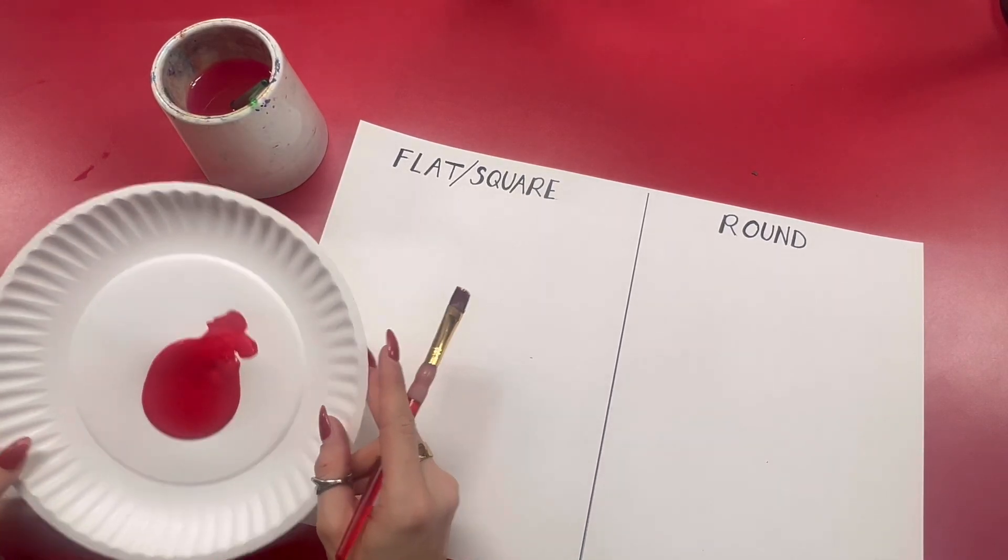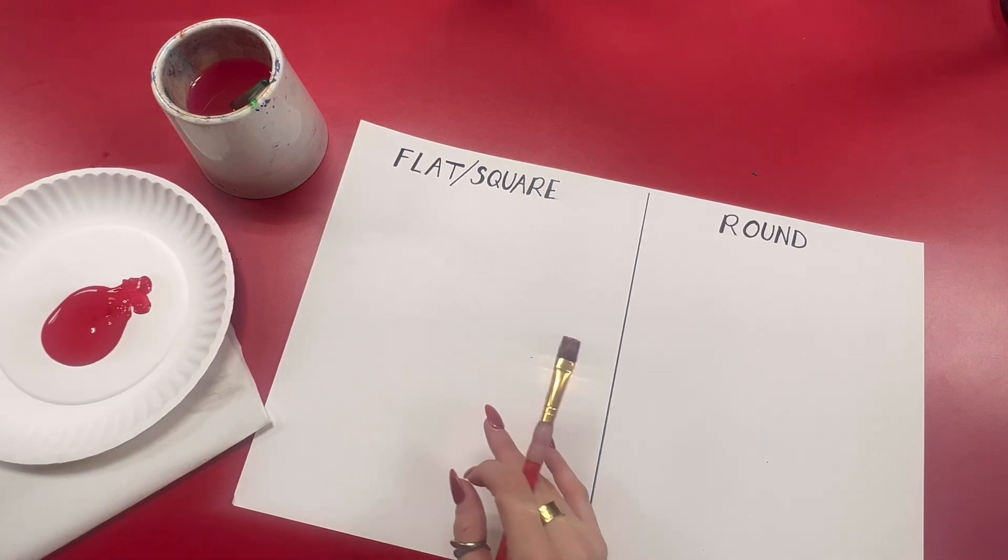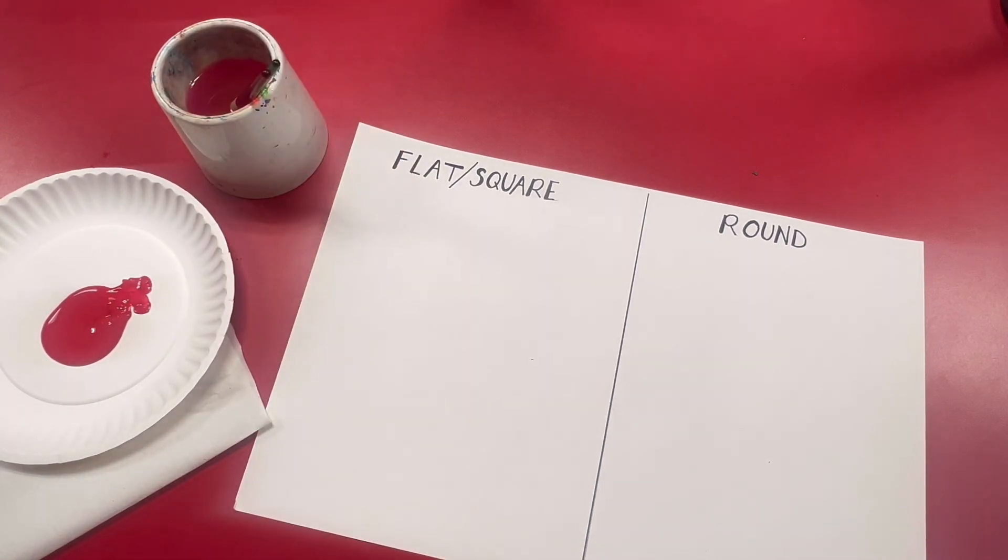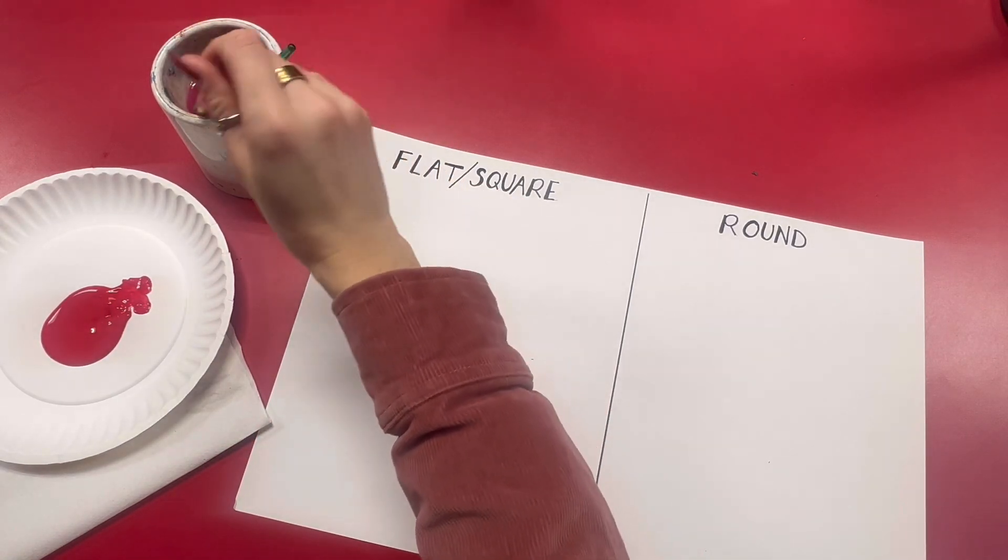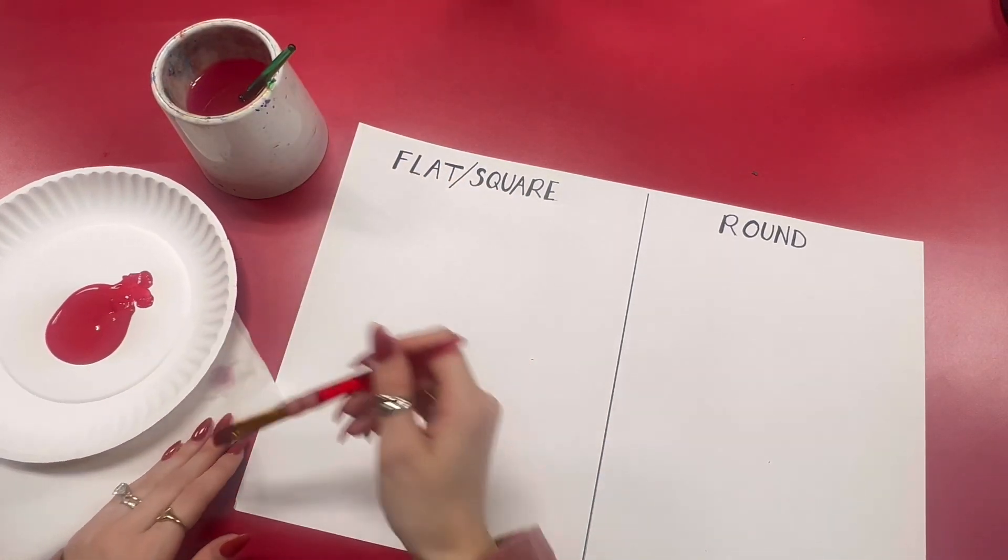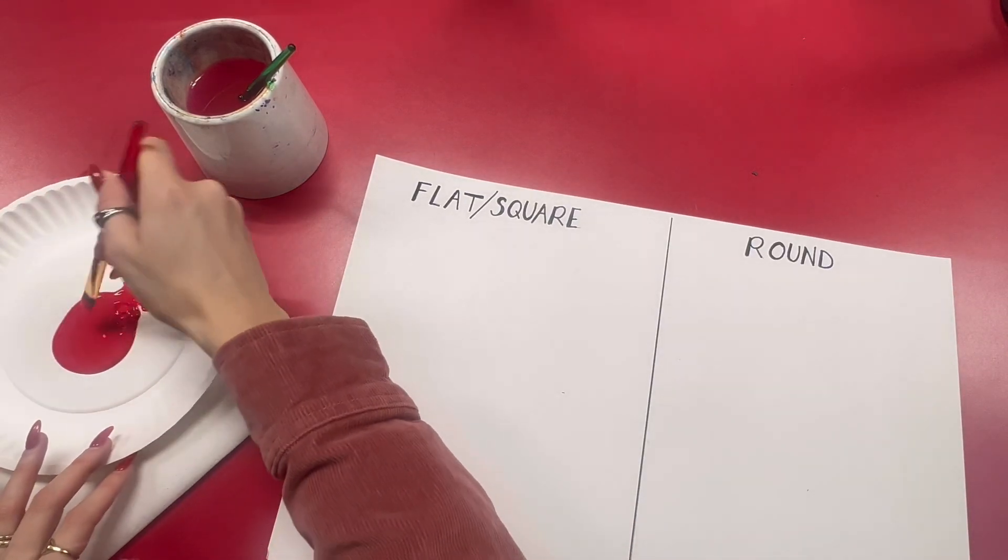Everyone will get their own paint and you can choose whatever color you want for this. You're only going to need one color. And before you get started you actually want to make sure your paint brushes are wet so that the paint can stick into the brush easier. If you need to get off some of that extra water, dab it on the paper towel, and I'm going to go in and grab some paint.